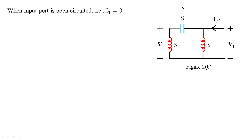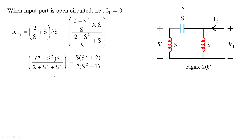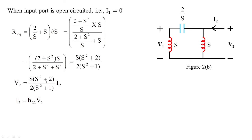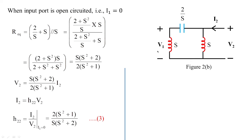We get v2 in terms of i2 using R_equivalent. Looking at Figure 2b, s is in series with 2/s, and this combination is in parallel with s. So R_eq = s(s² + 2) / [2(s² + 1)]. Therefore v2 = R_eq · i2. From h22 = i2/v2, we get h22 = 2(s² + 1) / [s(s² + 2)].